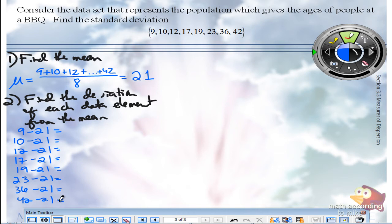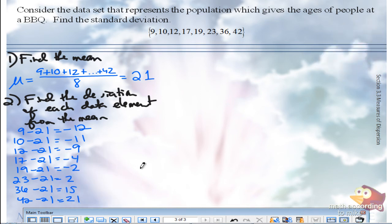What you get. Good. Negative 4. Always, always, always, when you add up the deviations, you should always get zero. So use that as a way of checking your work.